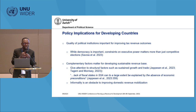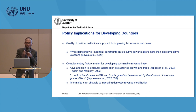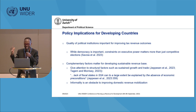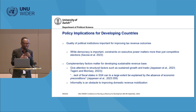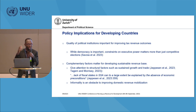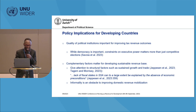In a nutshell, our work suggests that the quality of political institutions is important. Countries dependent on natural resources need not suffer a curse in terms of their ability to mobilize taxes from a more sustainable base. The quality of institutions can play a mitigating role alongside other complementary factors. I'll end here and we can have the discussion.